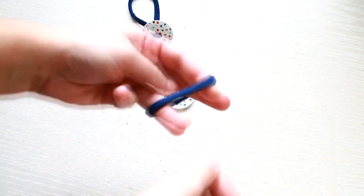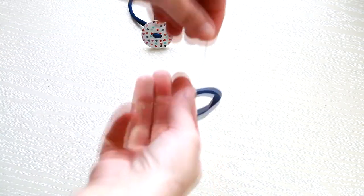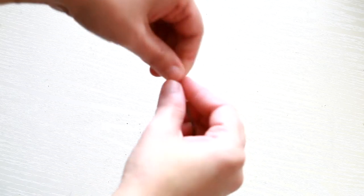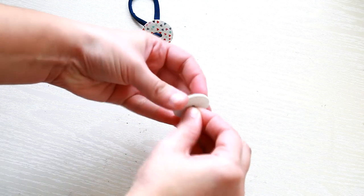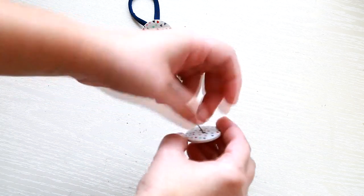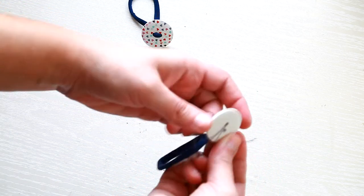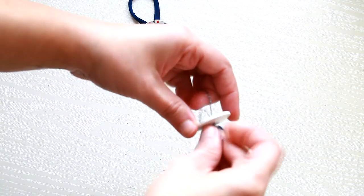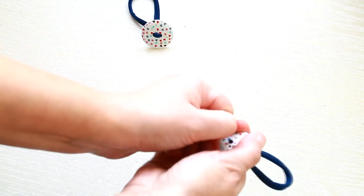First you need to pass the elastic through the first hole of the button. In order to do so I'm using a piece of thread. This will help me pull the elastic through the hole. I usually use a very thin crochet but as I couldn't find it I used the thread instead.